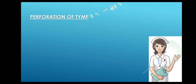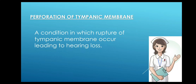Today we are going to deal with perforation of tympanic membrane. The definition: it is a condition in which rupture of the tympanic membrane occurs, leading to hearing loss. It is a rupture of the eardrum — a hole in the tissue that separates the ear canal from the middle ear. The tympanic membrane, or eardrum, is the tissue separating the ear canal from the middle ear.